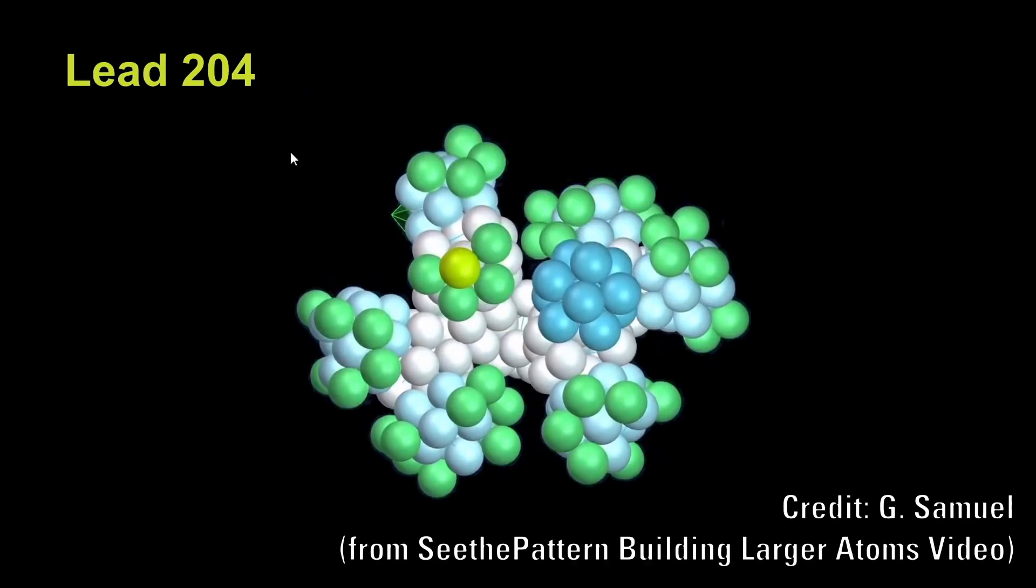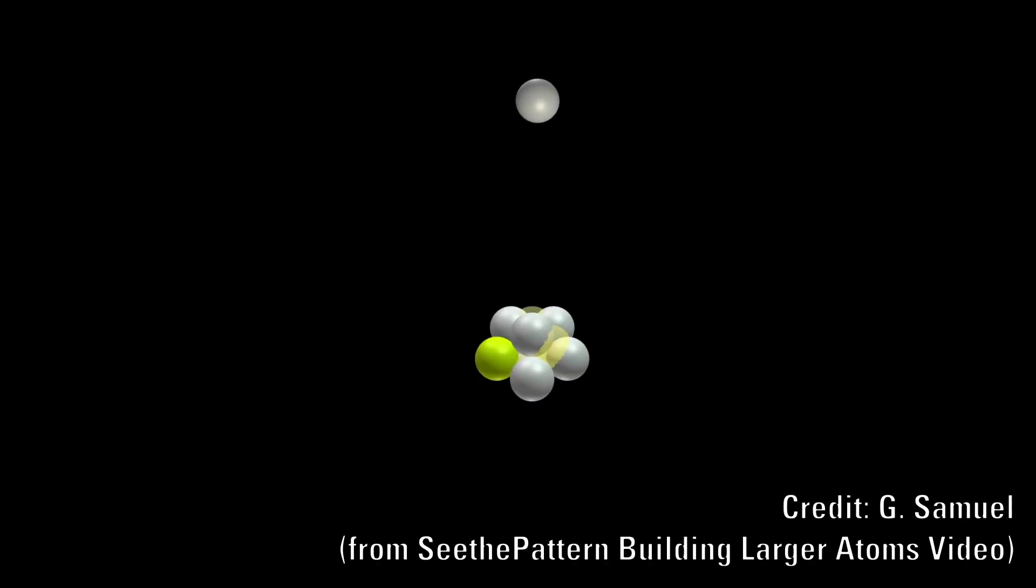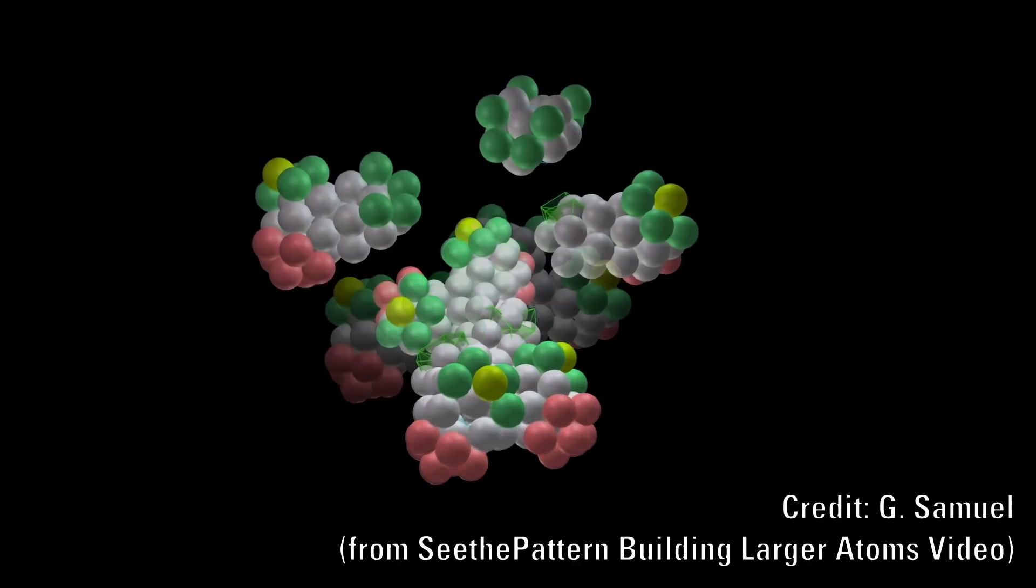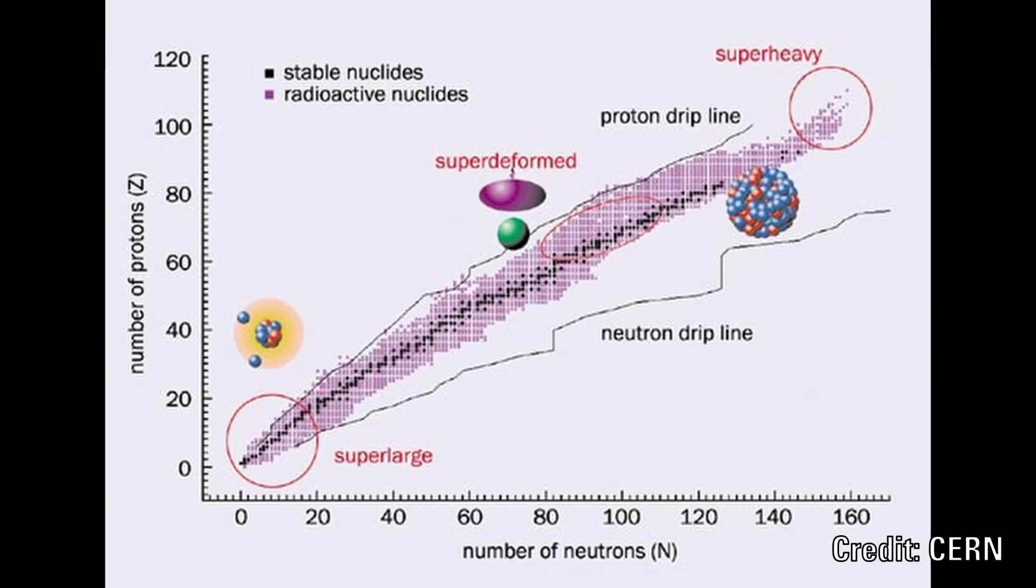It not only explains why elements become unstable after lead, but also why alpha decay happens in some elements and yet not others, and why uranium-235 splits asymmetrically and the origin of the neutron drip line.